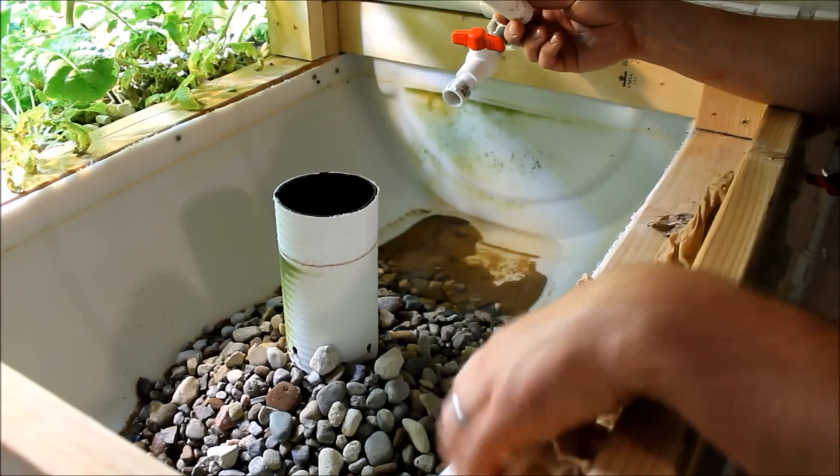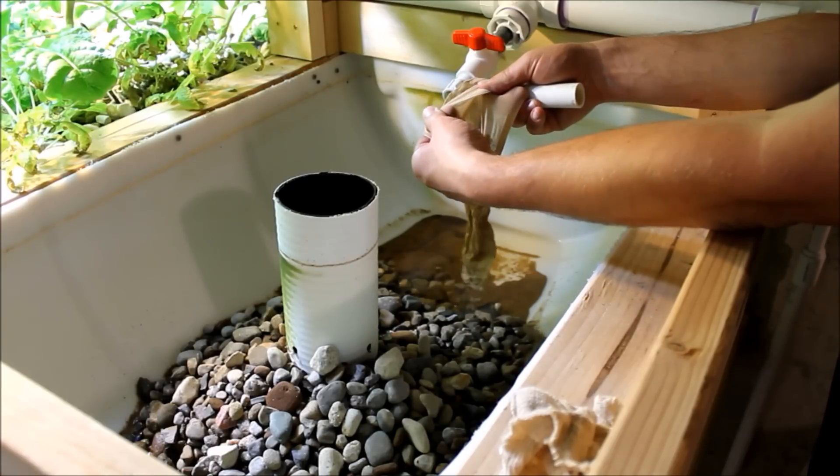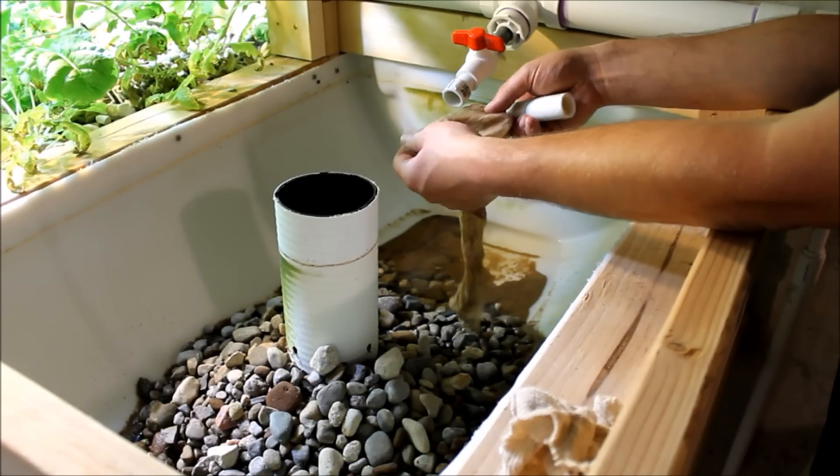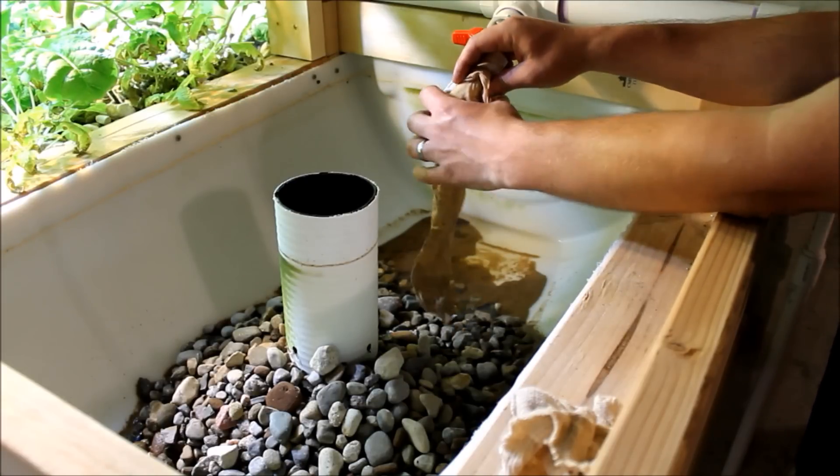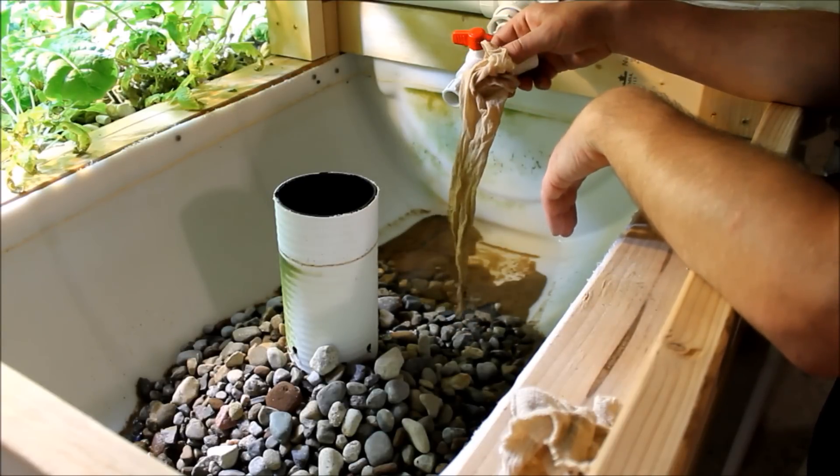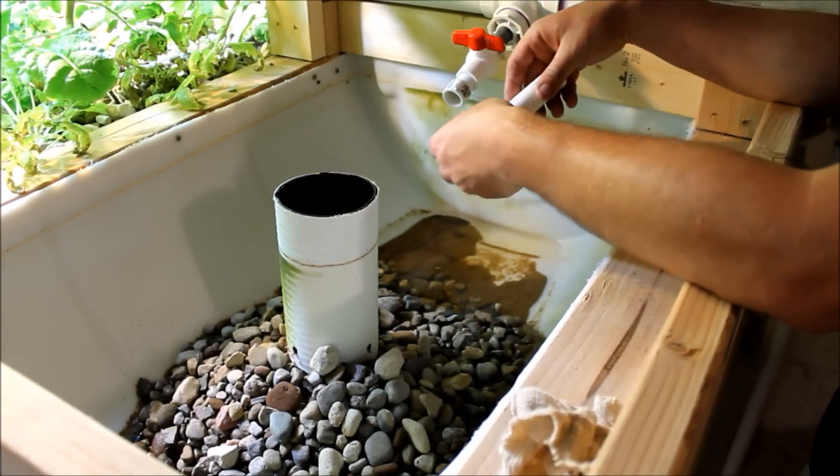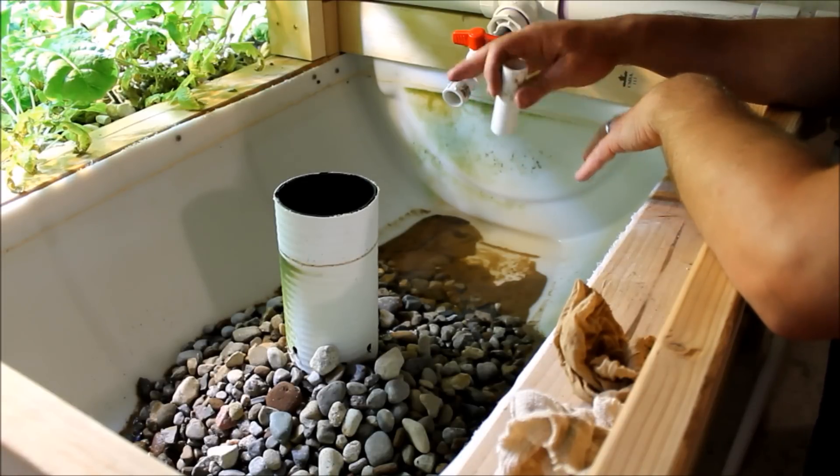The other thing I found that worked really well was these stockings. It's a real thin material, it lasted a lot longer before I had to clean it. I just basically put those on here and they would fill up and filter out any of the real fine debris and fish waste and anything else that got into the system.